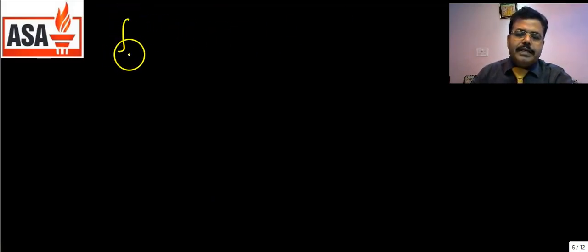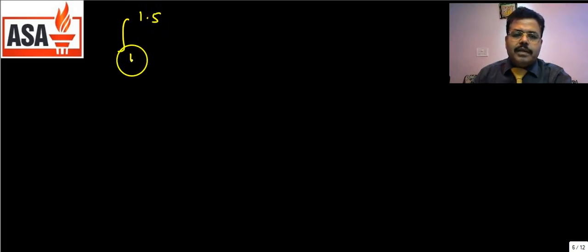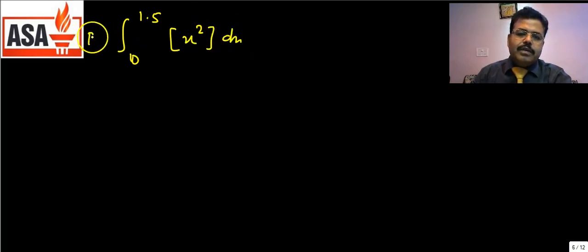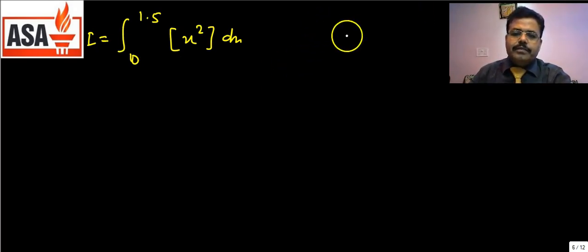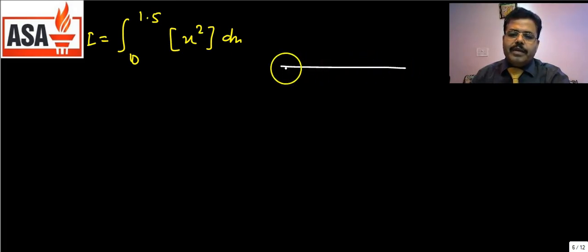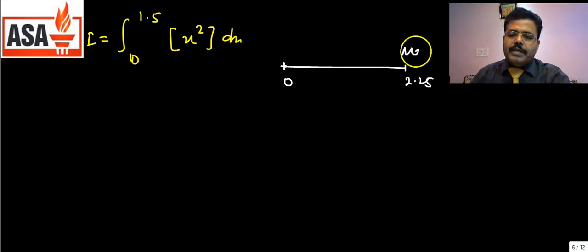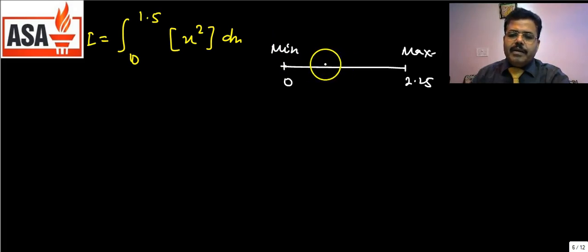Now let us take a slightly more typical question: ∫₀^1.5 [x²] dx. Here, putting x=0 gives 0 (minimum value), and x=1.5 gives (1.5)²=2.25 (maximum value). So the integer values between 0 and 2.25 are 0, 1, and 2. We must reject the maximum (2). The limit breaks where x²=1, giving x=1, and where x²=2, giving x=√2. The last limit is 1.5. So we break at x=1 and x=√2.